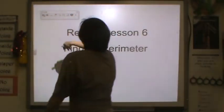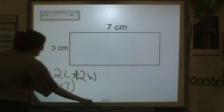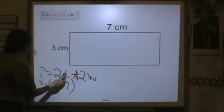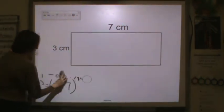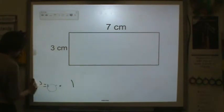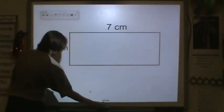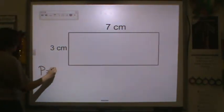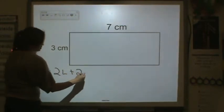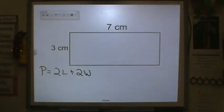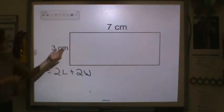We're doing review in lesson 6, finding perimeter. Remember, when you find perimeter, perimeter is equal to 2L plus 2W. And remember, L stands for length and W stands for width.